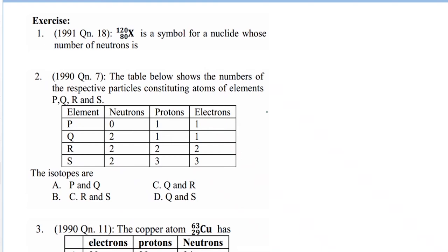Let's do this exercise on the atom. These numbers are coming from examination-style past paper questions — that's why you're seeing things like '1991 question 18' or '1990 question 7'. These are questions adopted from past paper questions.